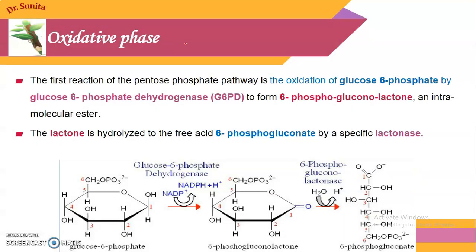Now we will discuss the first phase — the oxidative phase. The first reaction is the dehydrogenation of glucose-6-phosphate, catalyzed by the enzyme glucose-6-phosphate dehydrogenase. This gives the product 6-phosphogluconolactone and results in the reduction of NADP+ to NADPH. This 6-phosphogluconolactone is then hydrolyzed into 6-phosphogluconate with the help of a lactonase enzyme, specifically 6-phosphogluconolactonase. So the first reaction product formed is 6-phosphogluconate from glucose-6-phosphate.